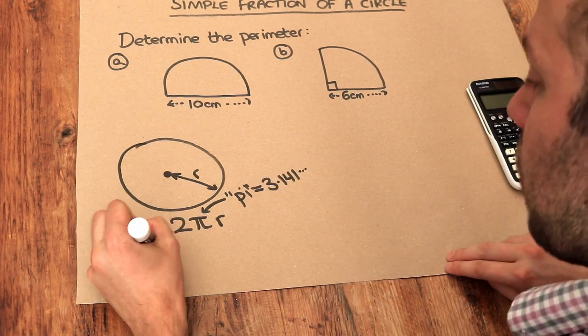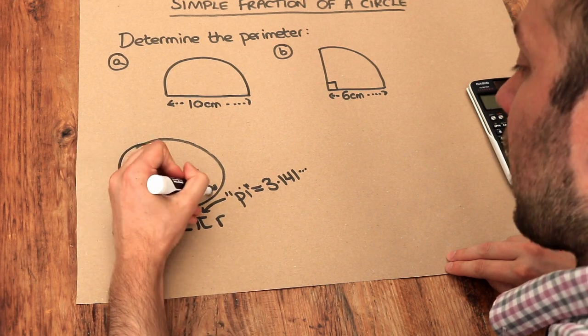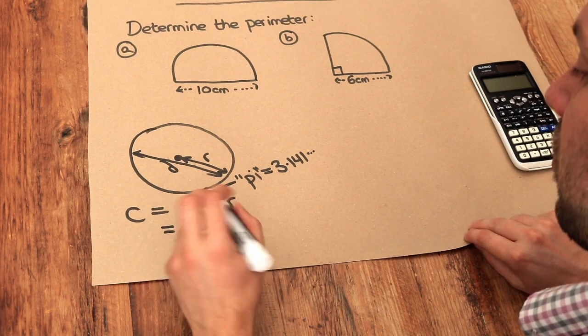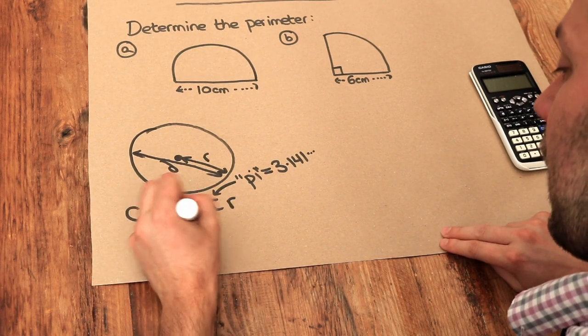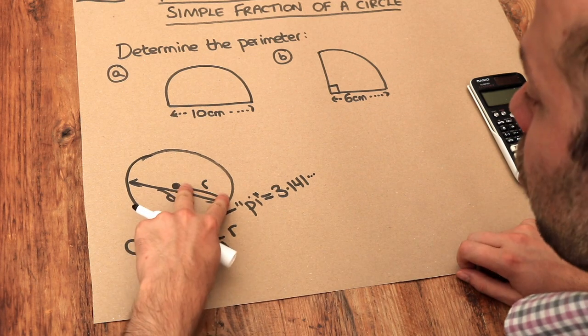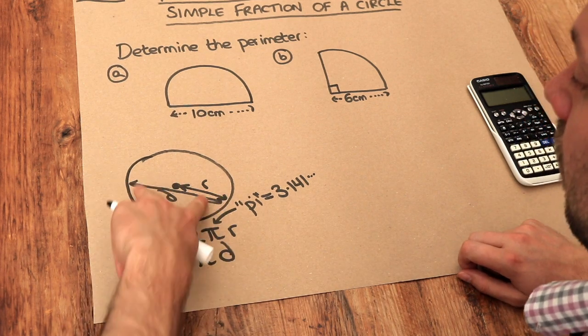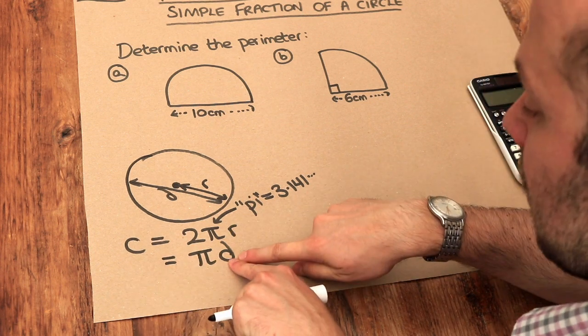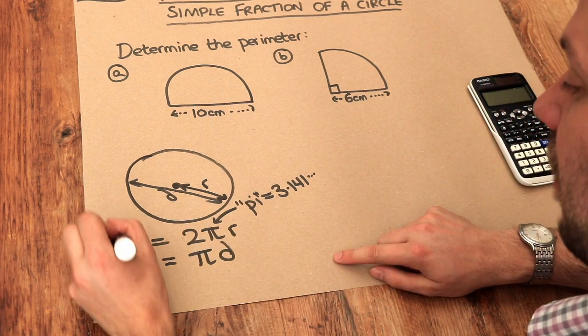But there's another formula as well. If we had the full diameter of the circle, d for diameter, then we could also write the formula as pi times the diameter. And that's just because two lots of the radius forms the diameter. So I can replace this two lots of the radius with just the diameter of the circle. So they're the same thing really.